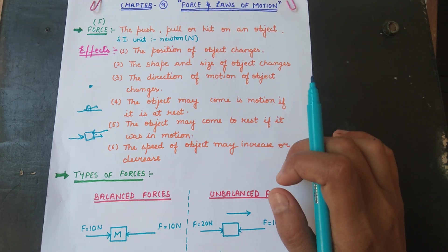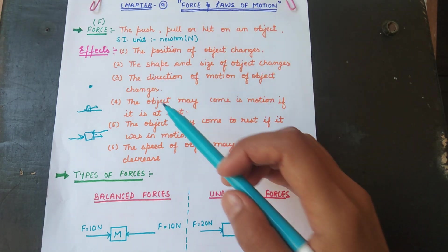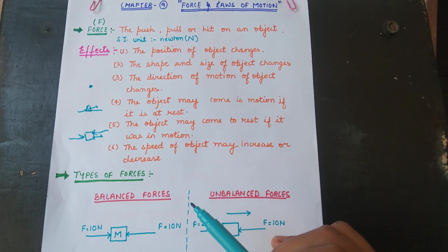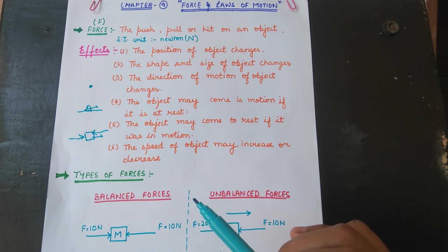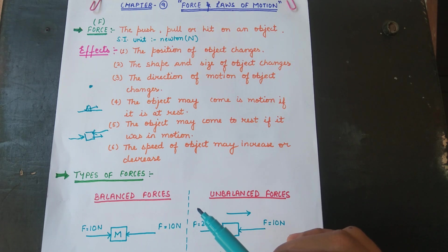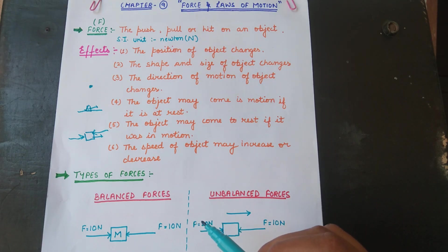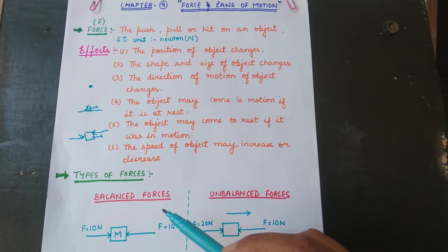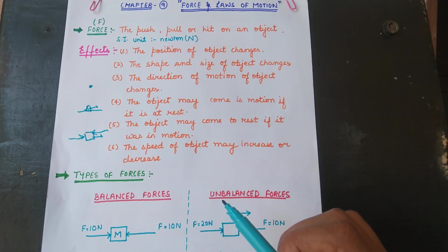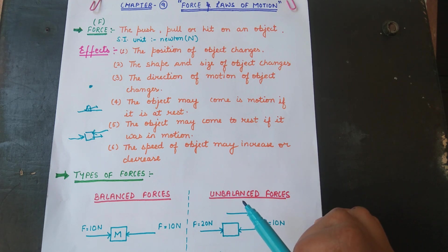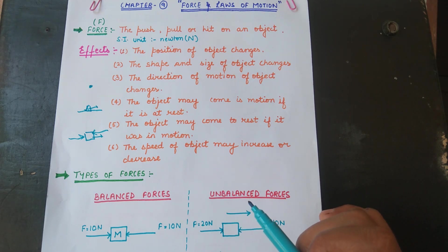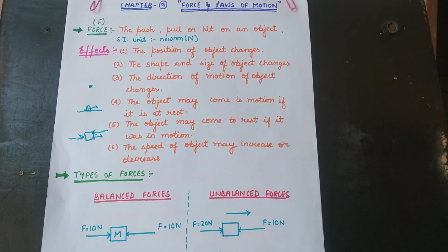There are different types of forces — gravitational force, magnetic force, electrostatic force, and others. Here we will discuss two main types of forces that act on an object in opposite directions: balanced forces and unbalanced forces.